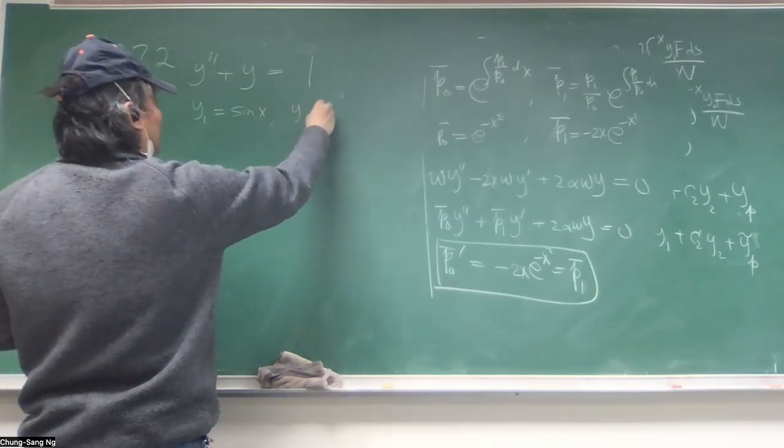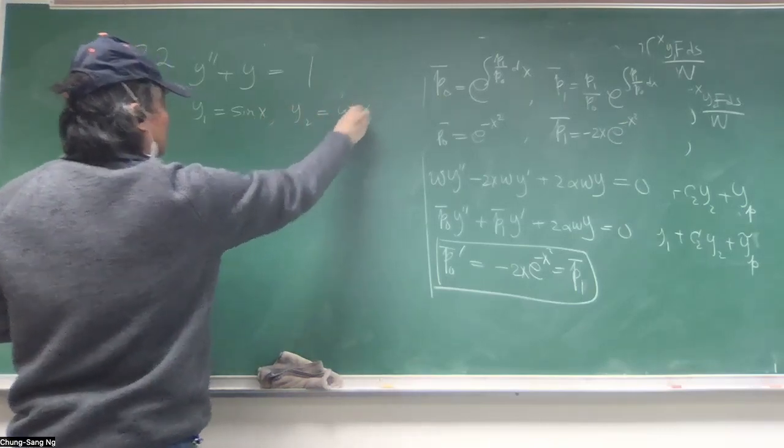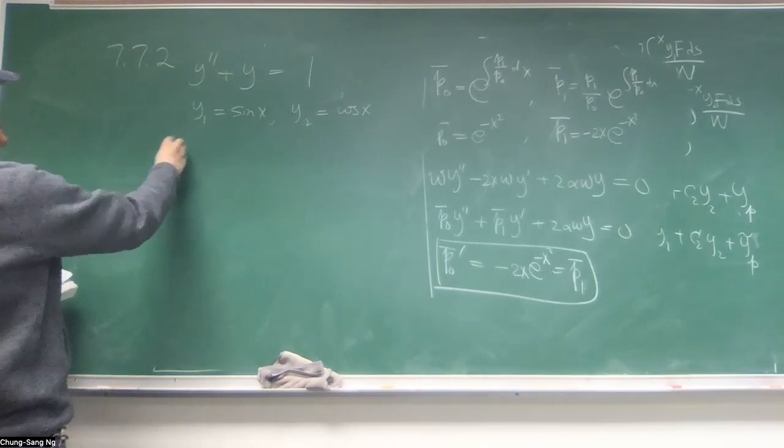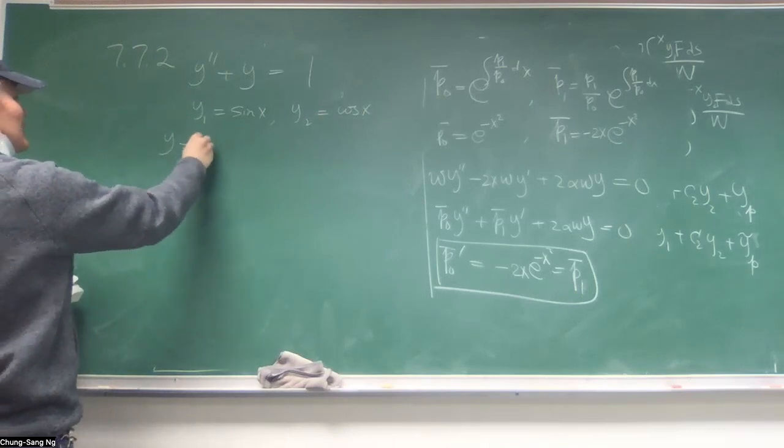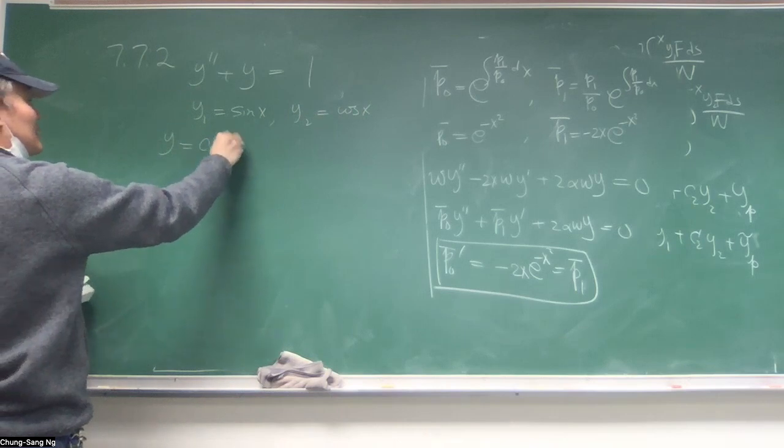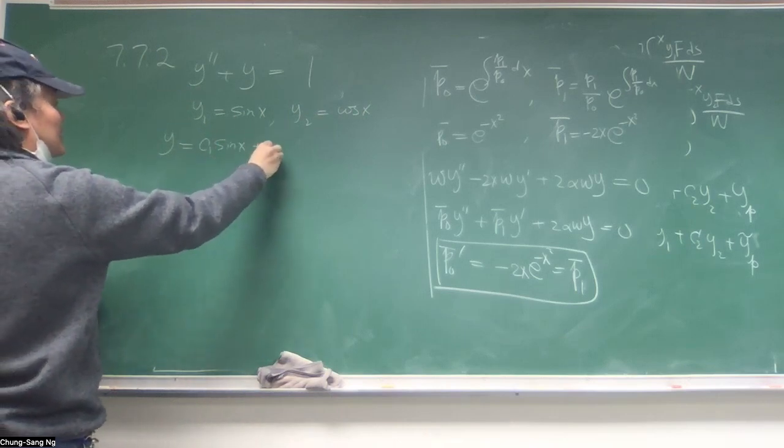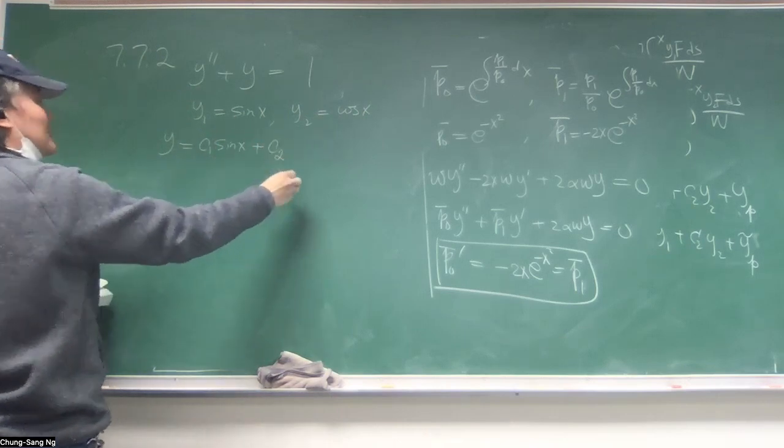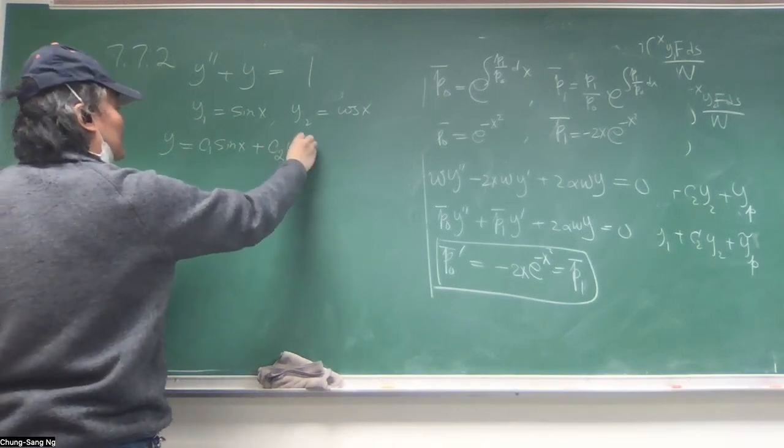And likewise, you can choose y2 as cosine x. Right? And so the general solution will be any arbitrary coefficient times y1 which is sine x, and arbitrary coefficient c2 times y2 which is cosine x.